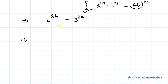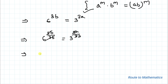Now I will take the (1/3b) power on both sides. So 6 to the power (3b/3b) equals 3 to the power (3a/3b). The 3b cancels on the left and 3 cancels on the right, giving us 3 to the power (a/b) equals 6. We were asked to find the value of 3 to the power (a/b), so the answer is 6.